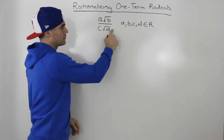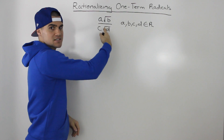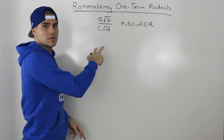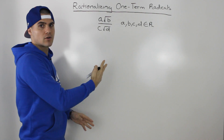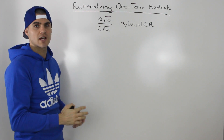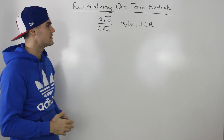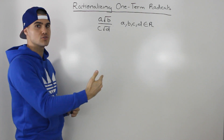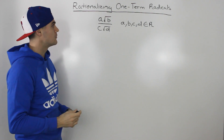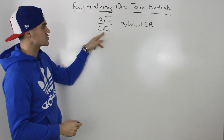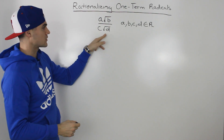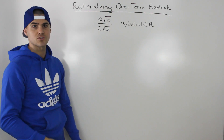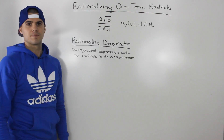For example, if there's a plus or minus of another term, then that would be a two-term radical, and the way you rationalize that is a little bit different — we'll cover that in a future video. But for now, we're just going to work with these one-term radicals where there's no other term added or subtracted to it.